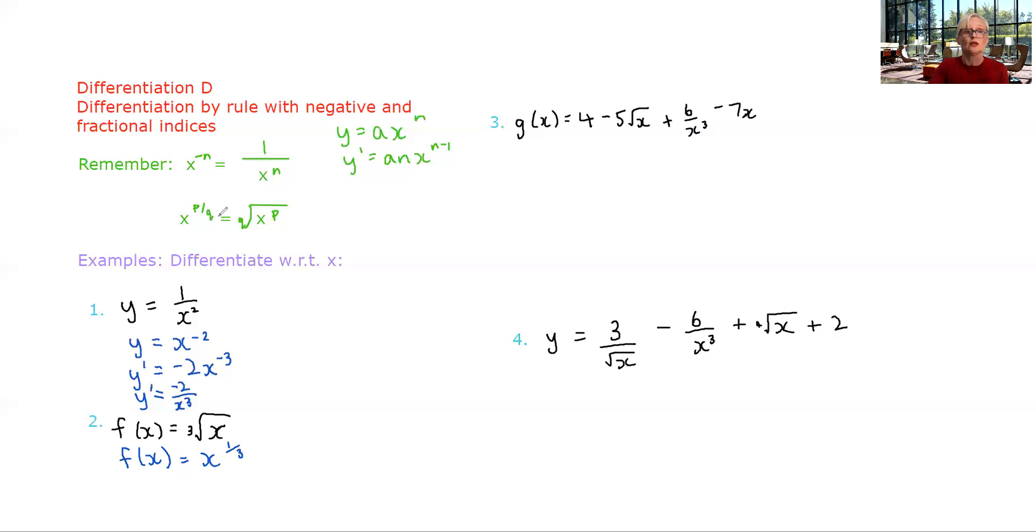x to the p over q, this is your power and this is your root. So it's one really here. So it's x to the one third. So f dash x, we go about our normal process, bring this down to multiply and decrease by one. What is a third minus one? It is negative two thirds.